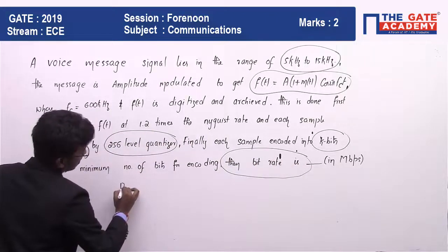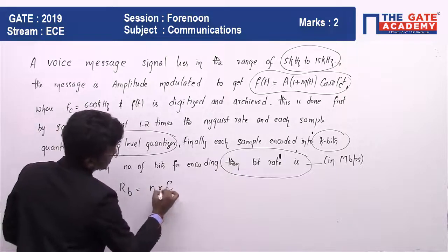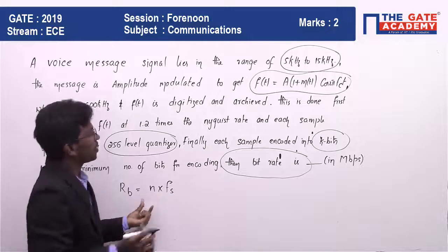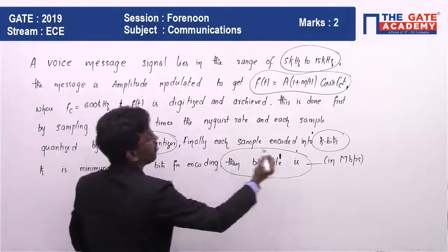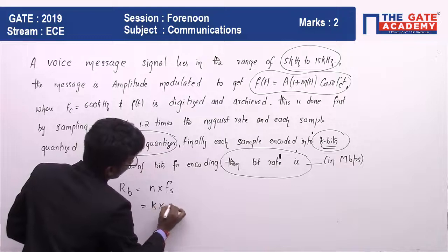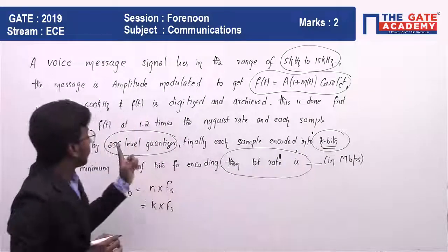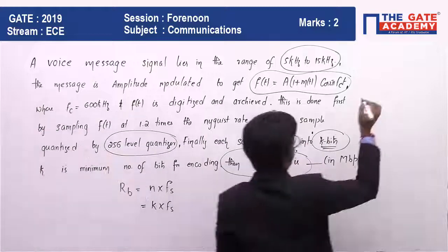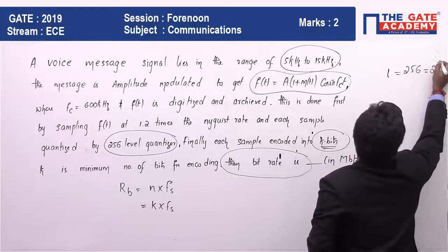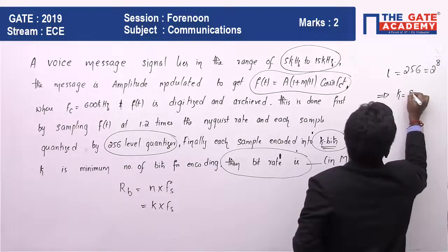From sampling and PCM, we know rb = n × fs, where n is the number of bits encoded. Here the number of bits encoded is k, so our formula becomes rb = k × fs. To find k: the number of levels L = 256 = 2^8, which implies k = 8.